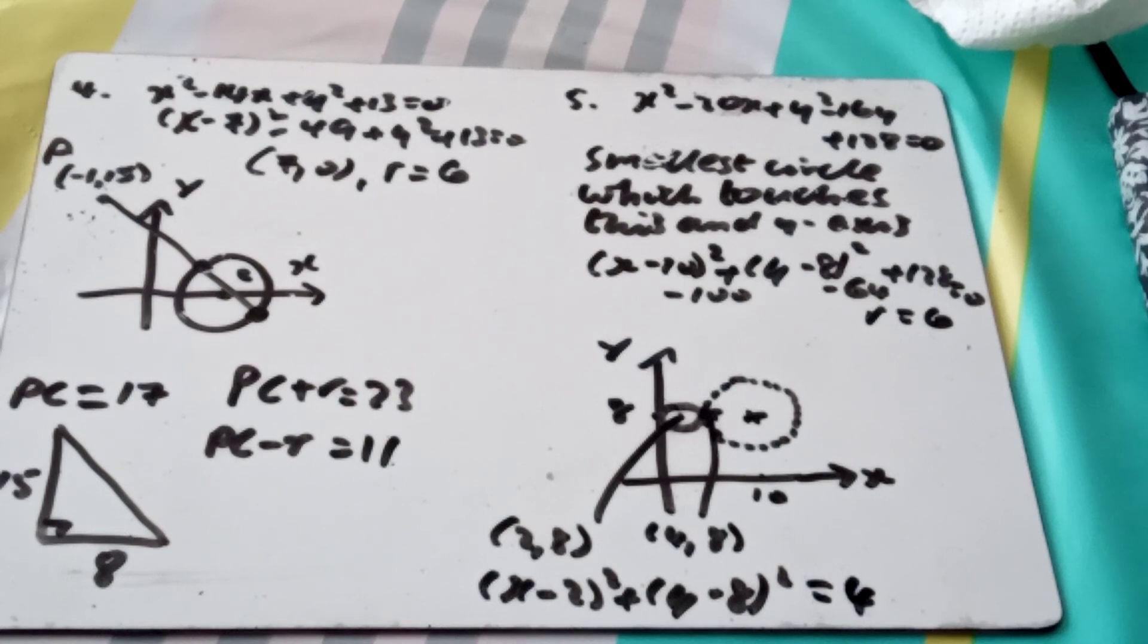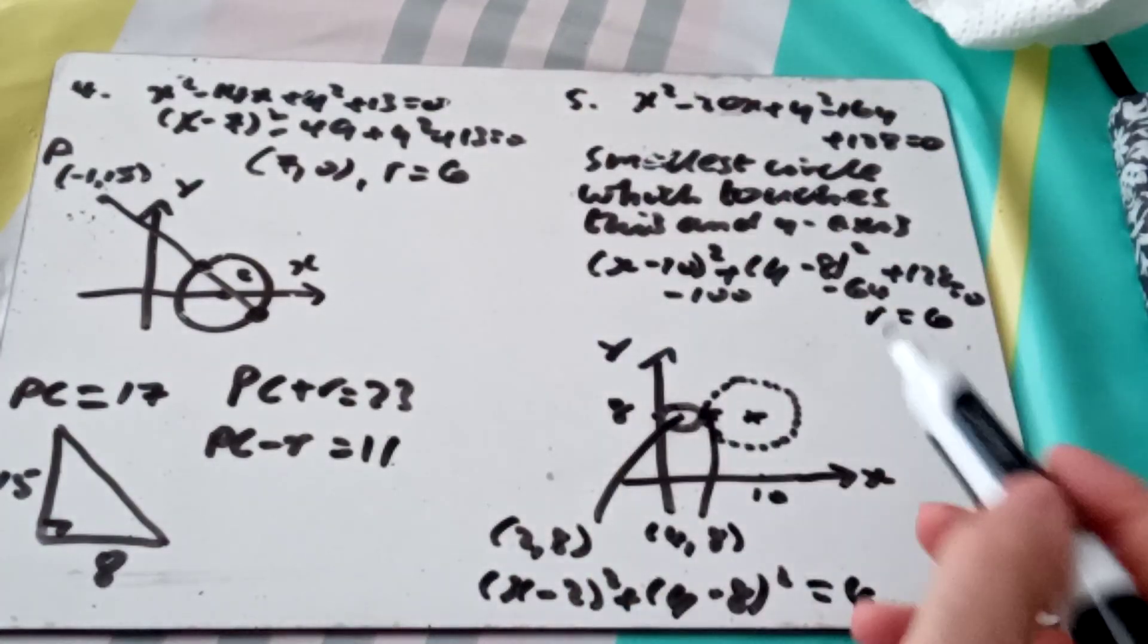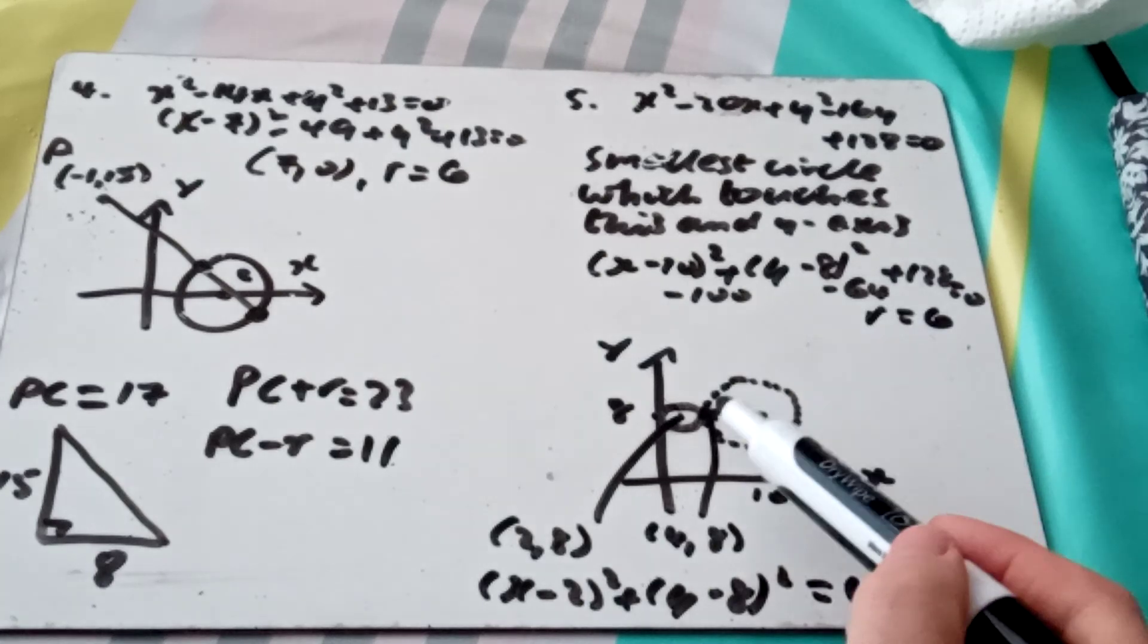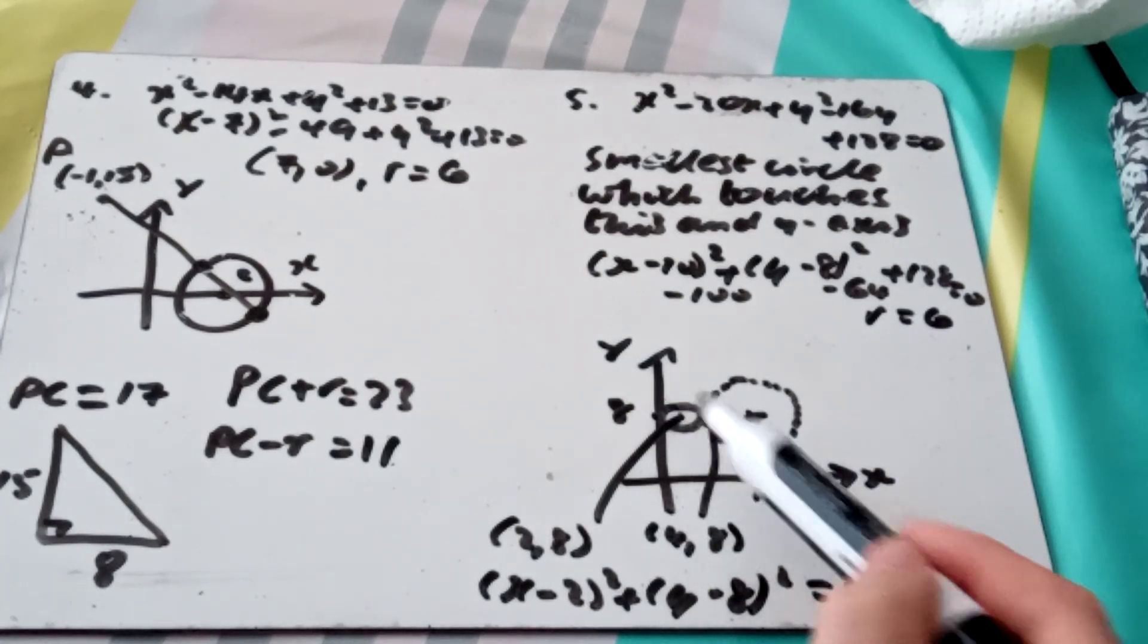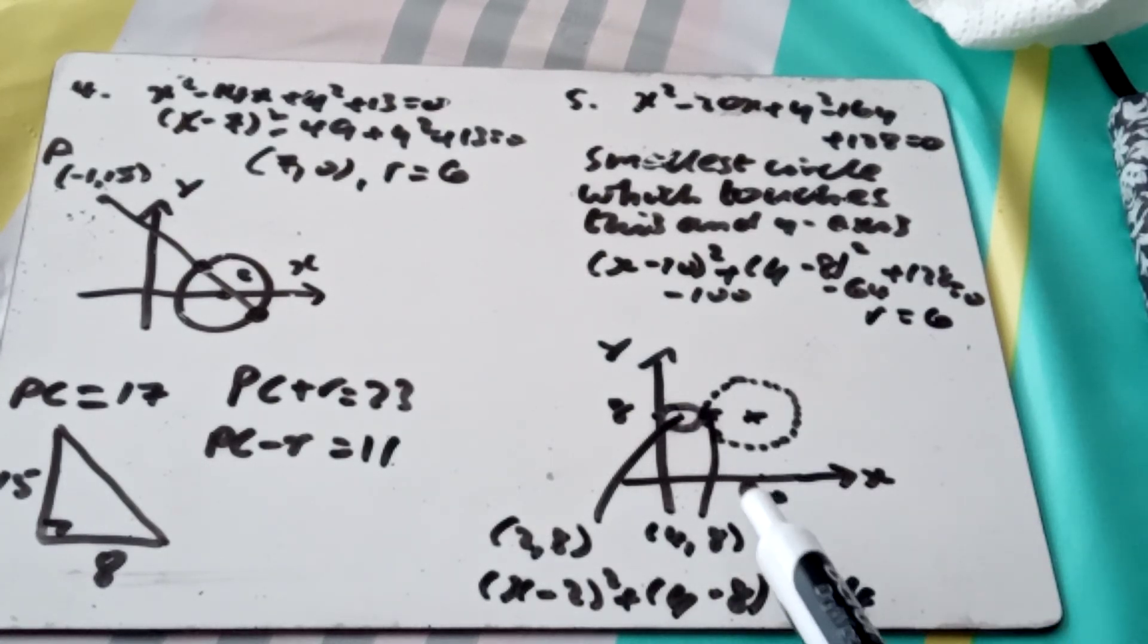So in that case there, I've used the diagram, used the fact I can do my completing the square to get the equation, and from that I can sketch it, have an idea of what my little circle looks like. It's not the best drawing of a circle I know, but it'll do for now.